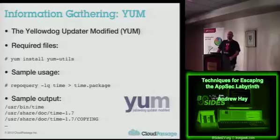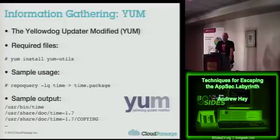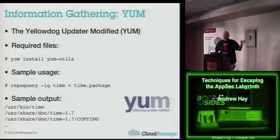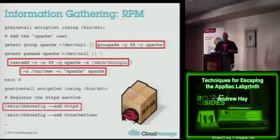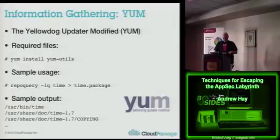Most people use Yum now instead of RPM, especially if they're using CentOS, just because it's a lot easier. There is a special utility you can install called Yum Utils, and then you can run repoquery. You can dump that to a text file and it's going to give you the exact same information as RPM -qlp — all the files and their locations. The benefit is you don't have to first download the package; this is querying the repository server and giving you the information, so you don't actually have to have that RPM local.